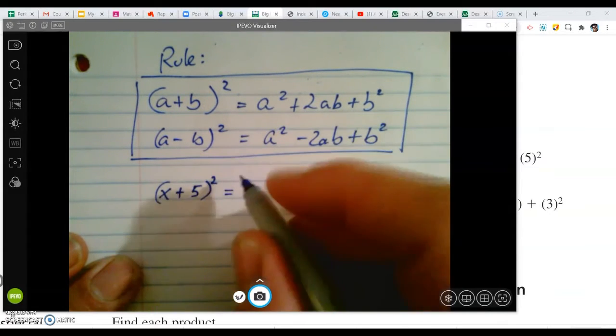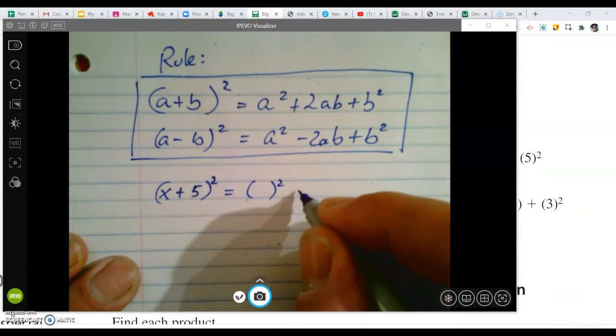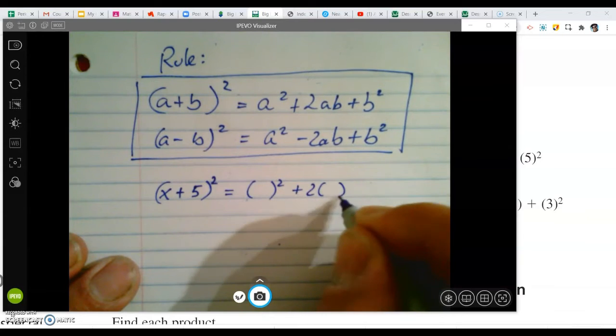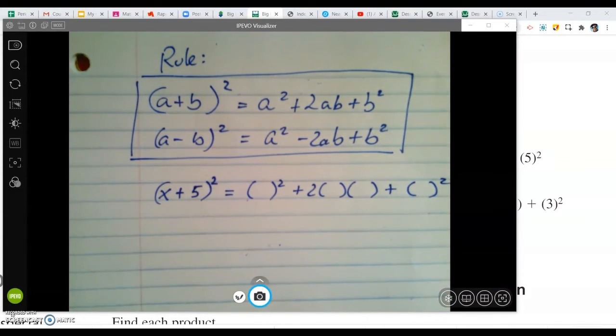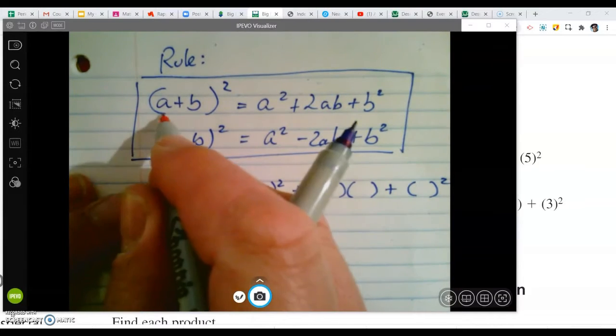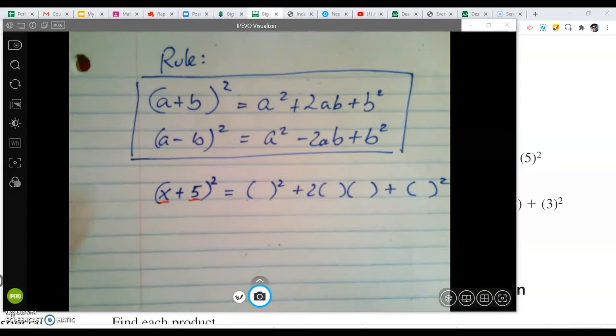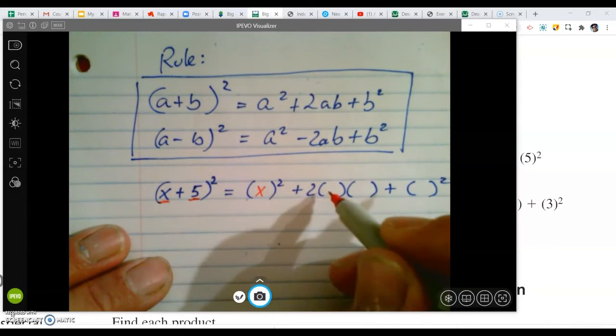What I'm going to do is follow this pattern, but instead of a's and b's, I'm going to put parentheses. And I'd recommend doing that any time you're filling in values from a formula. So instead of a and b, I have x and 5. So we're going to put x and 5.